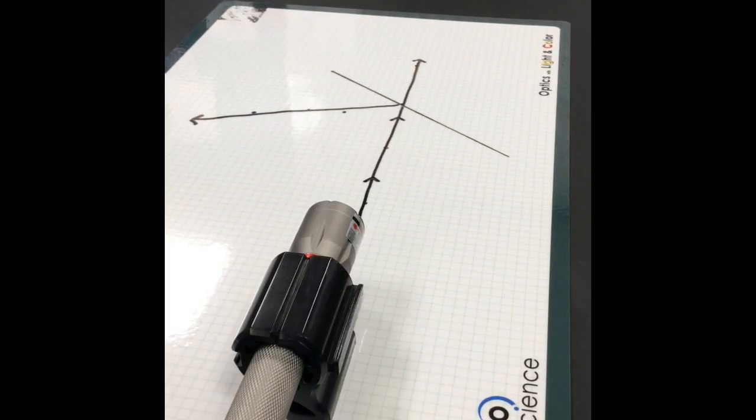The next thing that you can do is you're going to be taking a look at the normal line. So the normal line is just a line drawn that's perpendicular to the mirror.